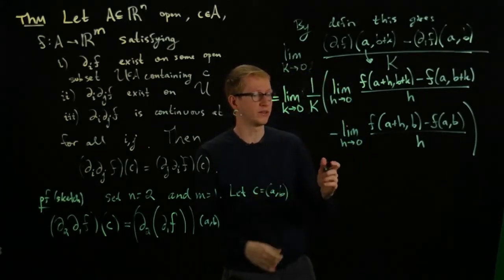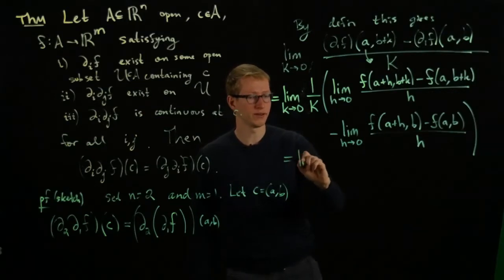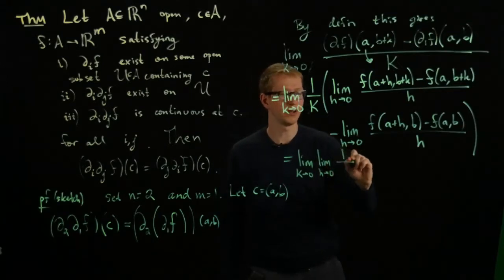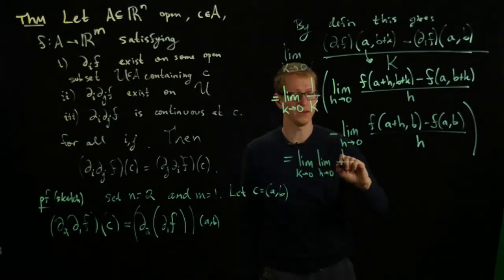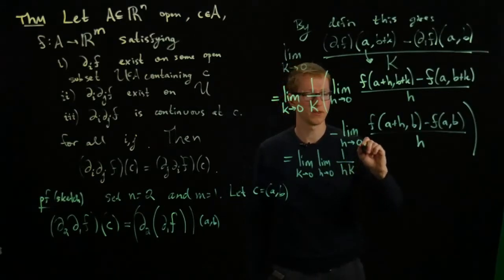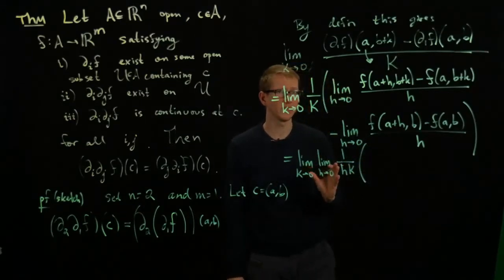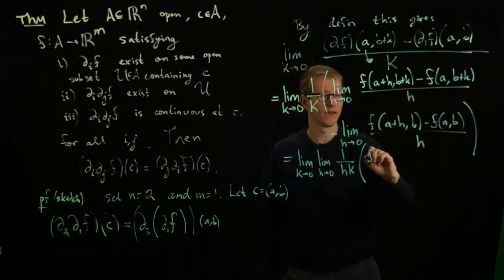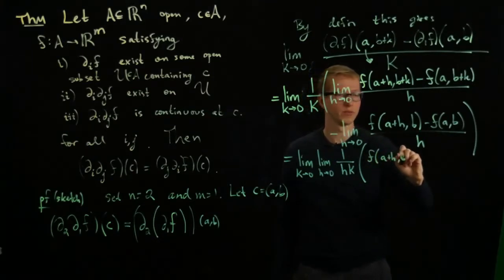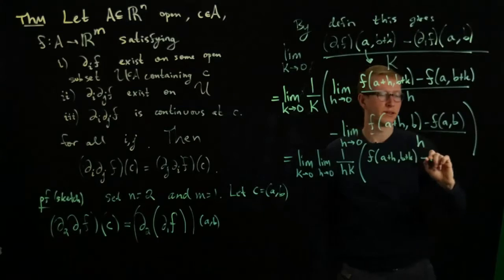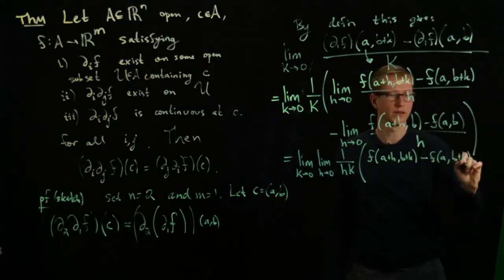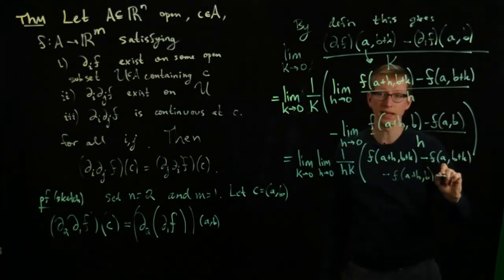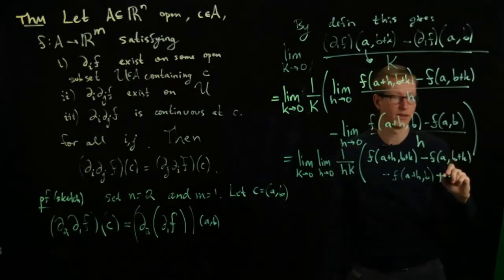Now we can distribute out the limits, being careful to preserve the order. When we do that, we get the limit as k approaches 0, limit as h approaches 0 of 1/(H·K) times a function. What is that function? It's the sum and difference of just four terms: F(a+h, b+k) minus F(a, b+k) minus F(a+h, b) plus F(a,b).